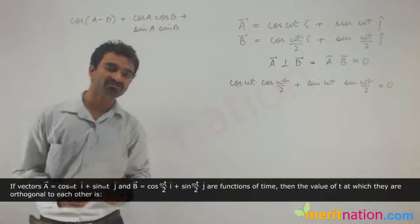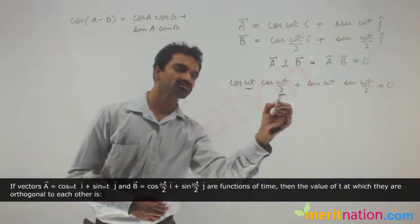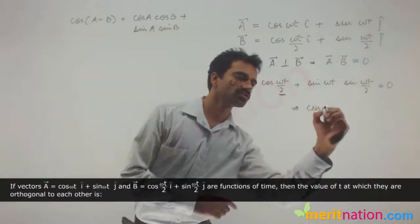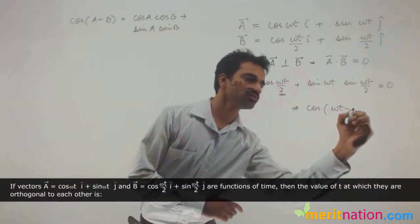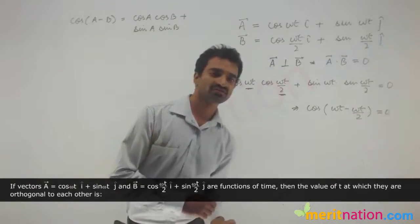Much like the expression that we have, and therefore we can easily identify a and b over here. This is a and this is b, and therefore I can simply write this entire expression as cos(ωt - ωt/2), and this is equal to 0.